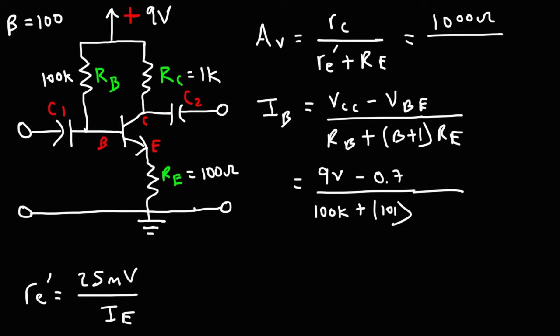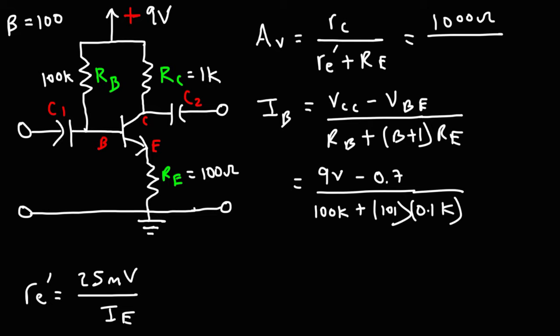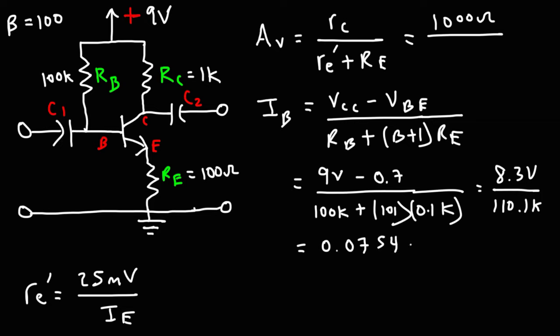RE is 100 ohms, but since RB is in kiloohms, we want the units to match, so we convert to kiloohms by dividing by 1,000. 100 divided by 1,000 is 0.1, so RE is 0.1 kiloohms. So we have 9 minus 0.7, which gives us 8.3 volts. Then 100 plus 101 times 0.1 gives us a total resistance of 110.1 kiloohms. So 8.3 divided by 110.1 gives us IB of 0.0754 milliamps.